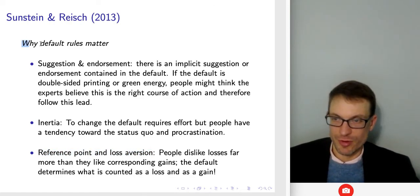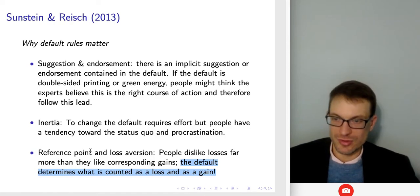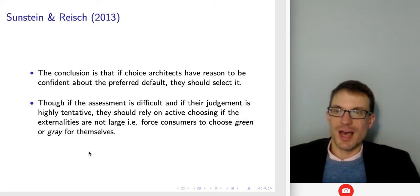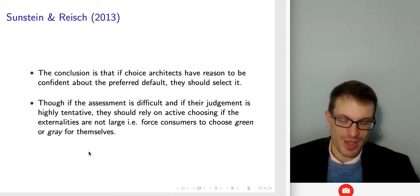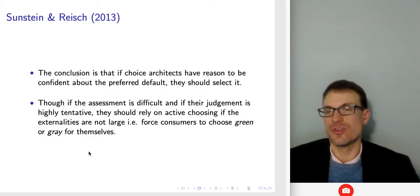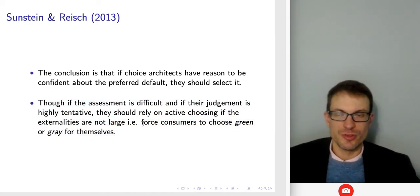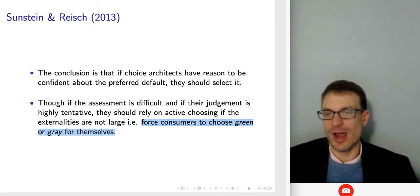Reference points and loss aversion explain why the default rule matters: people dislike losses far more than they like corresponding gains, and the default is what determines what counts as a loss versus a gain. The conclusion: if choice architects have reason to be confident about the preferred default, they should select it. But if their judgment is highly tentative and externalities are not large, they should rely on active choosing — forcing consumers to choose green or gray for themselves. This is a way to crowdsource the wisdom of crowds on the decision.